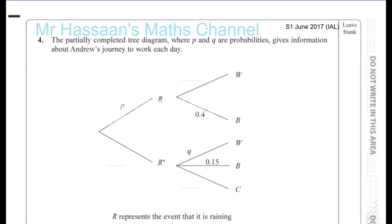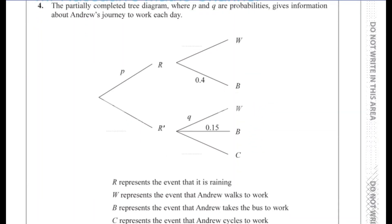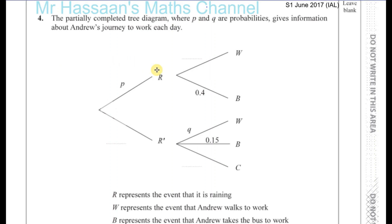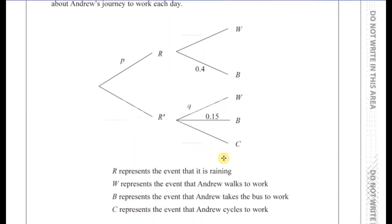Question number four from June 2017, International A-Level. Probability question. The partially completed tree diagram, where P and Q are probabilities, gives information about Andrew's journey to work each day. R represents the event that it's raining, R' means it's not raining. W represents the event that Andrew walks to work, B that he takes the bus, and C that he cycles to work.